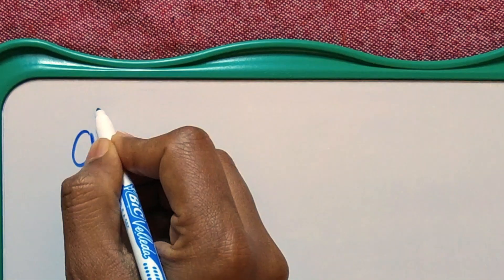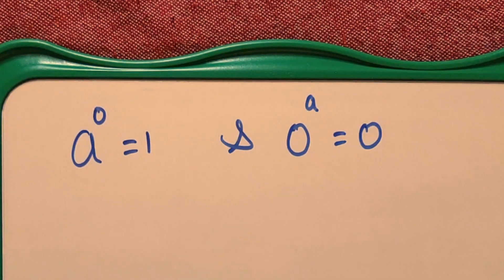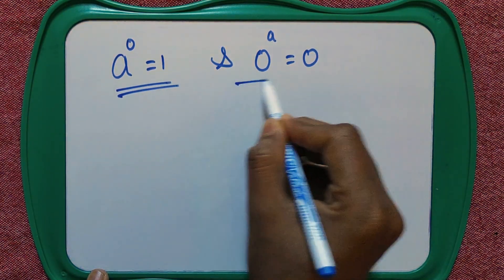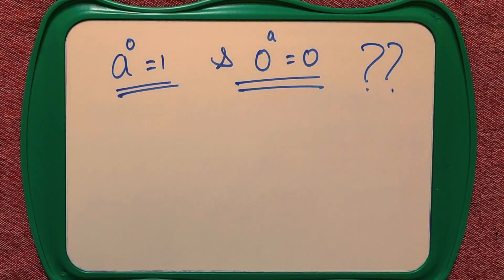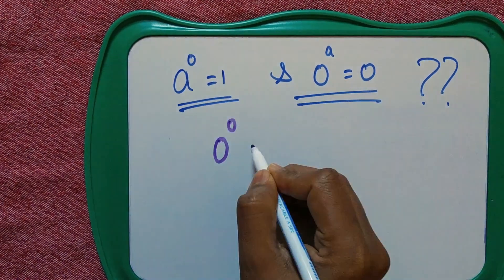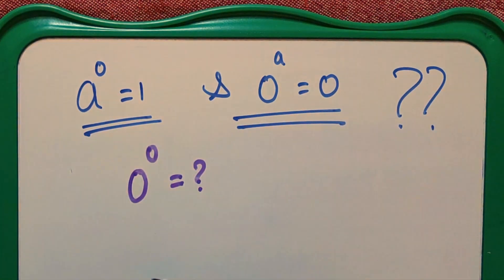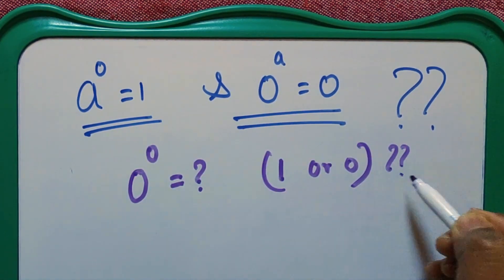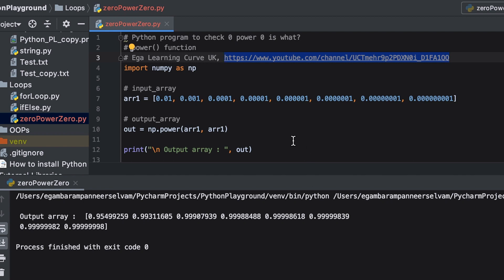Now we have understood two different points: a power 0 equals 1, and 0 power a equals 0. Now we are going to combine both. If I combine them, I get 0 power 0. What will the answer be — either 1 or 0? Because as per the first identity it may be 1, and as per the second identity it may be 0. So let's try to understand this from a coding perspective and then we will discuss.